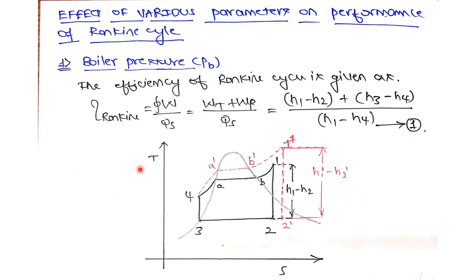The first parameter is boiler pressure — the pressure at which boiling of water takes place, and the conversion of saturated liquid to saturated vapor occurs. What happens if I increase the boiler pressure — will efficiency decrease or increase? What happens if I decrease the boiler pressure? These are the things we will be analyzing.